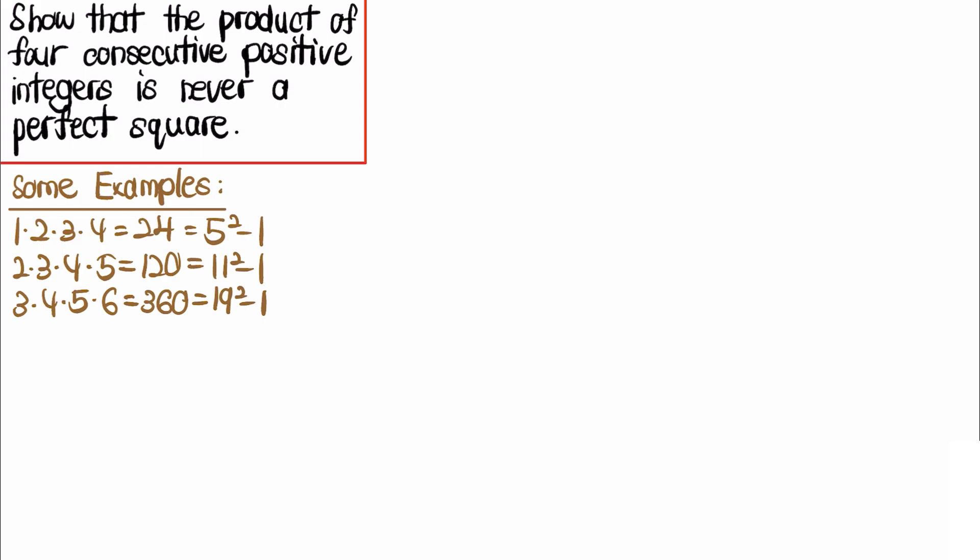We have the following examples: 1 × 2 × 3 × 4 = 24, and 2 × 3 × 4 × 5 = 120, and similarly 3 × 4 × 5 × 6 = 360.